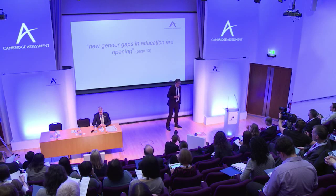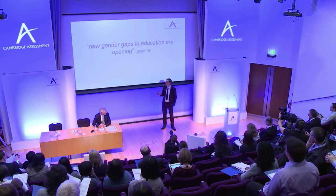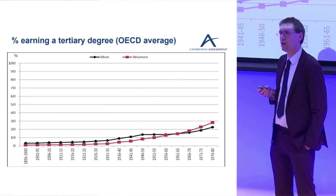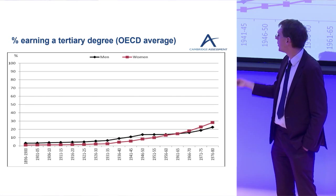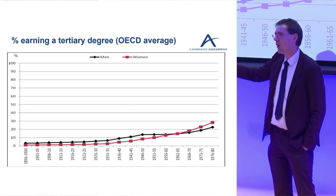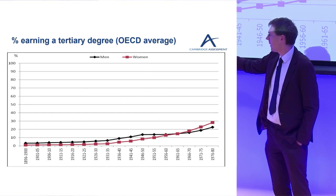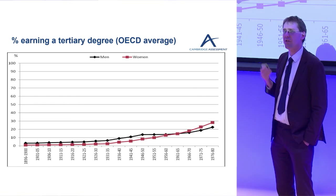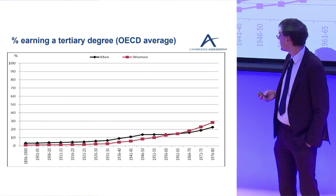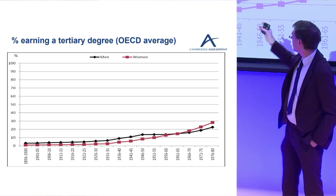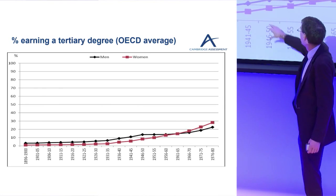One of the opening statements of this report was that new gender gaps in education are opening. Here is an old gender gap: some data looking at the percentage of a population that have got a degree over time, starting at the end of the 19th century up to the 1980s. A long time ago, very few people would have a degree, and particularly very few women. Over time this increased, but the gender gap remained in place until the 1950s.